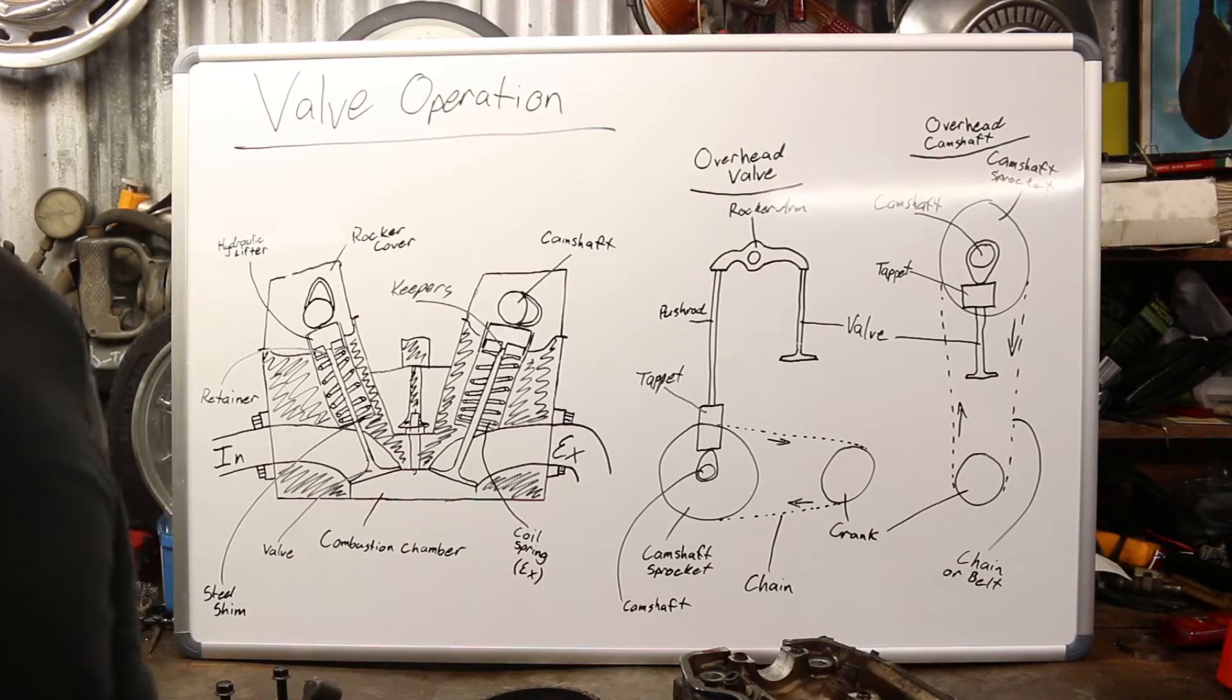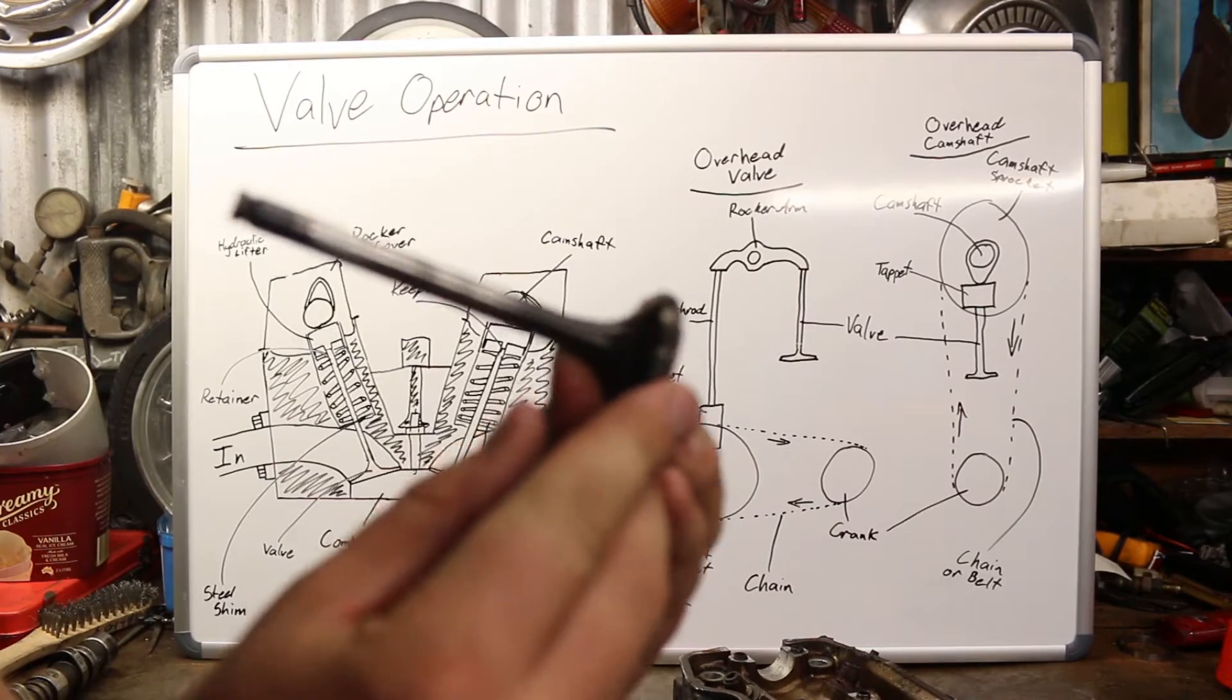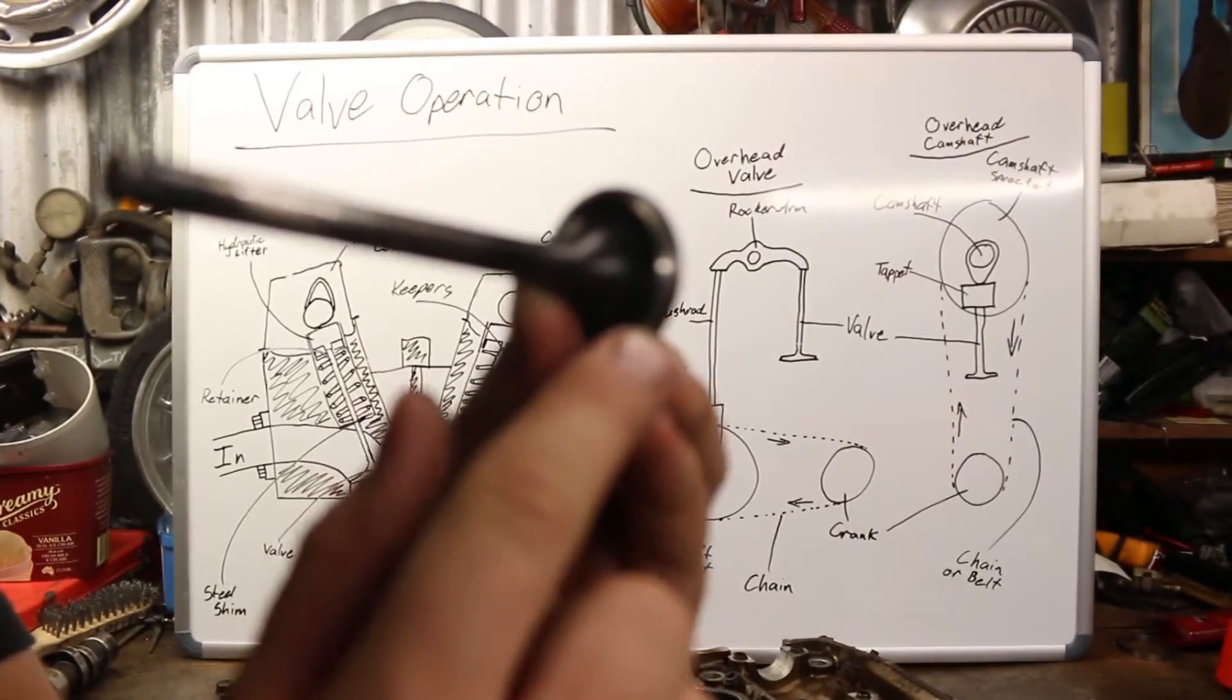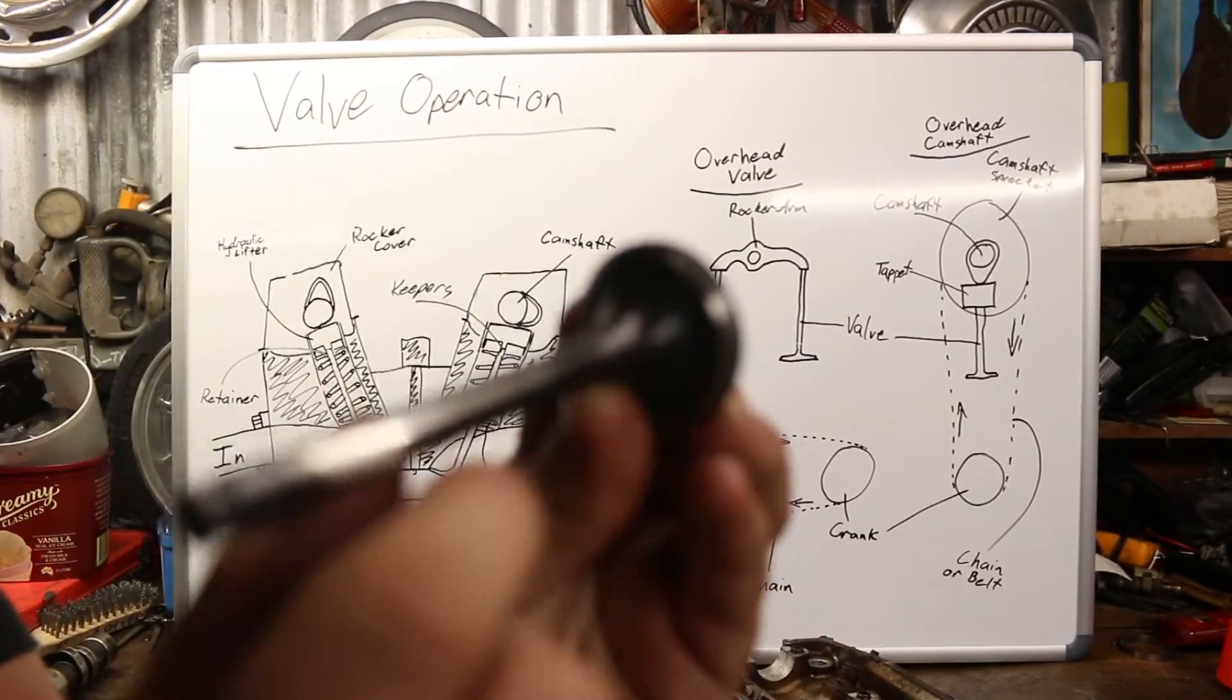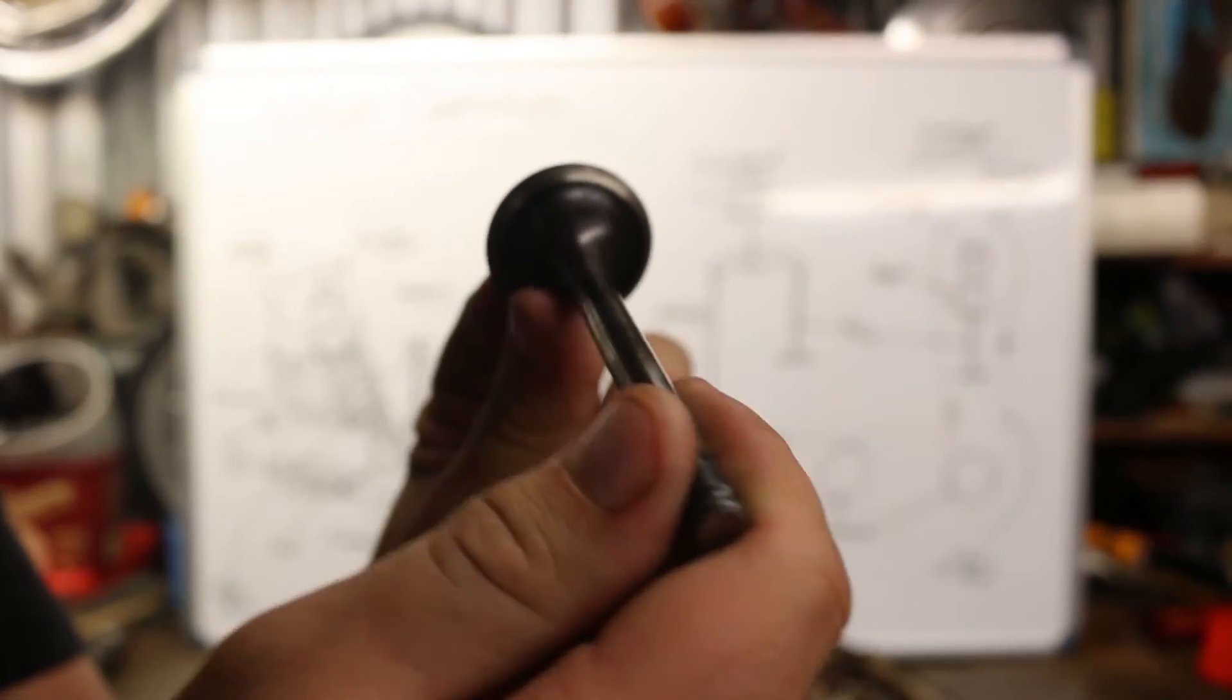Okay, just before we get into the diagram here, I'm briefly going to explain the reason why we have valves in our engine. So the valve that we have here, this shiny surface that goes around the outer edge of the valve head, that is what provides the gas tight seal.